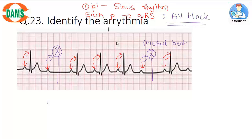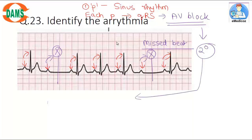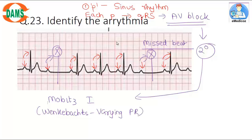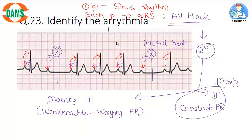Now determining which type of second degree AV block: Mobitz type 1 is characterized by Wenckebach phenomenon — a varying PR interval. Mobitz type 2 is associated with a constant PR interval. Looking at the tracing, the PR interval is constant, so this is second degree AV block, Mobitz type 2. That is the correct answer.